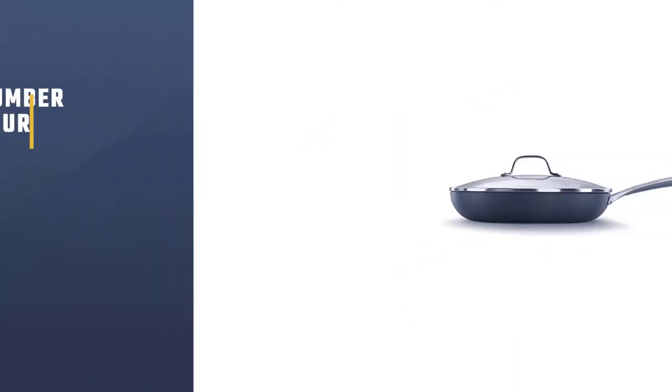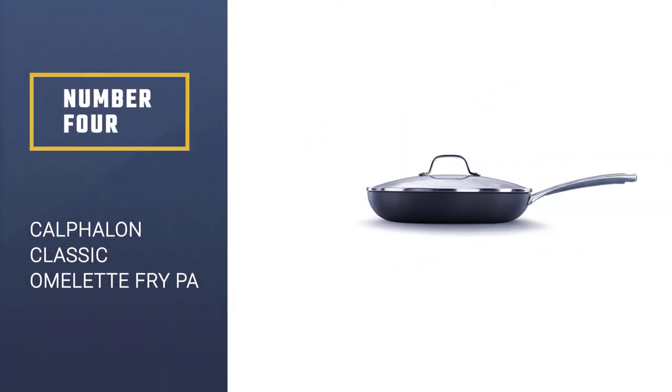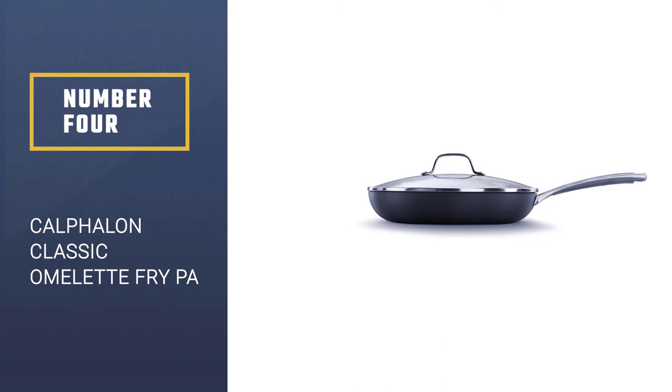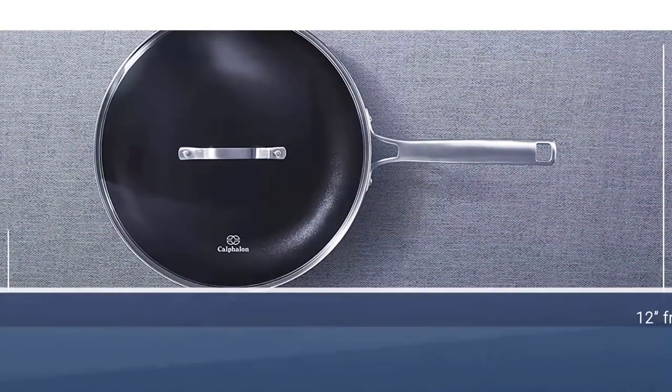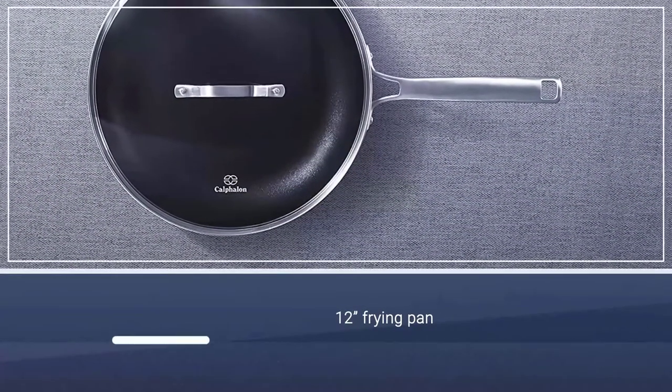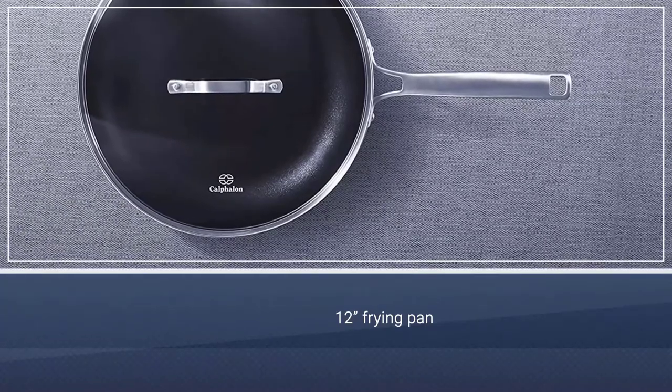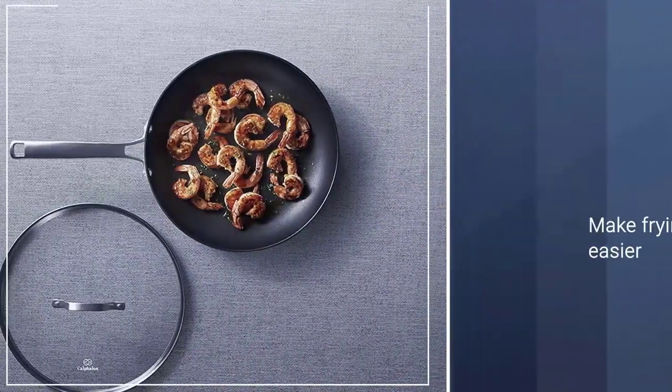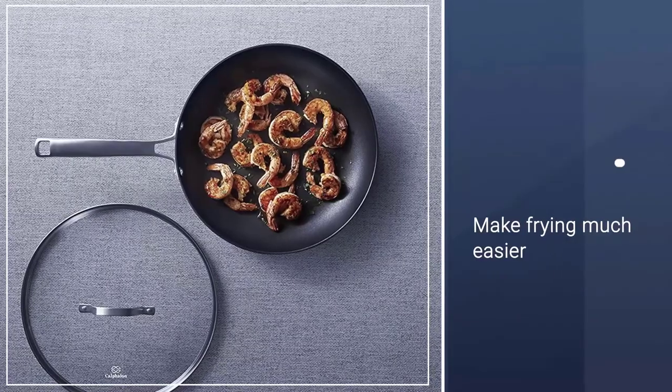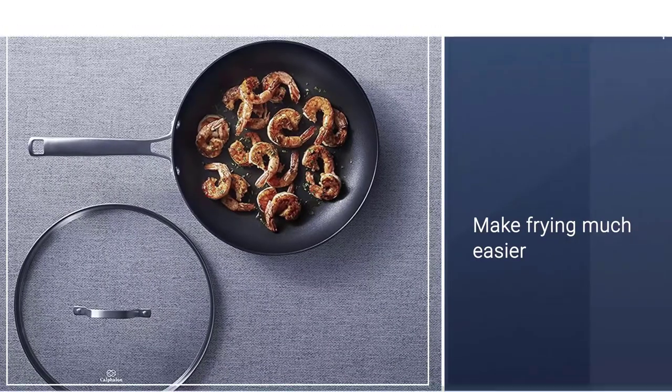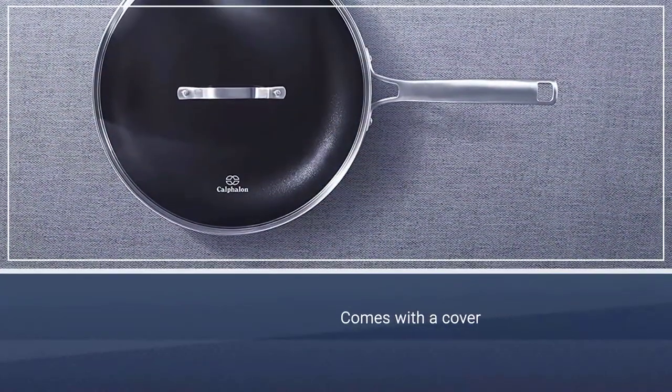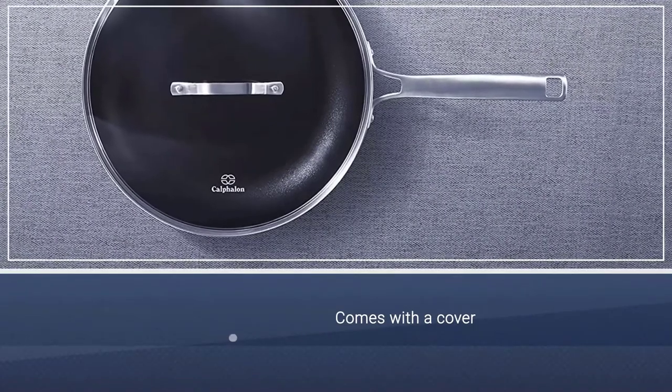Number four: Calphalon classic omelet fry pan. This is another high-performing nonstick fry pan we would like to talk about comprehensively. It is a 12 inch frying pan that displays gently sloping sides with flared edges to make frying much easier than ever before. Additionally, it comes with a cover and this makes it ideal for preparing fish, chops, steaks, and chicken.